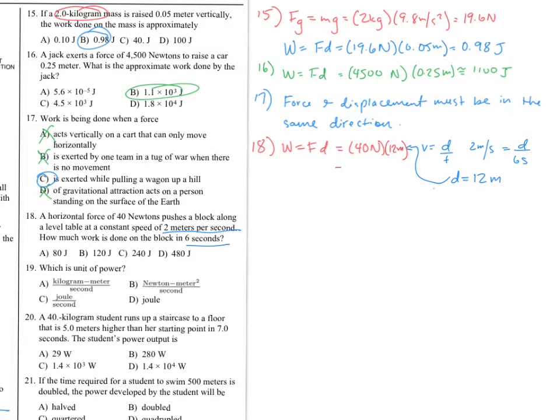D is equal to 12 meters which we're gonna bring over here. Okay, 40 times 12 is 480 joules. Choice D.